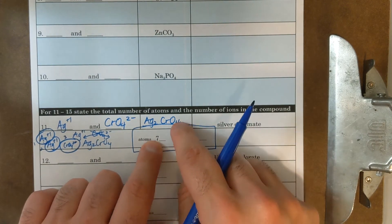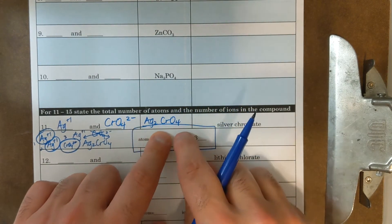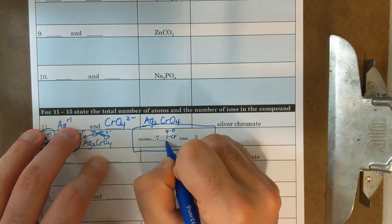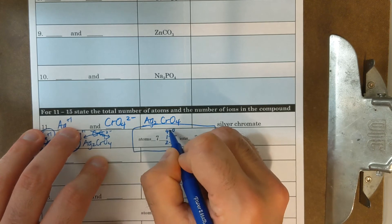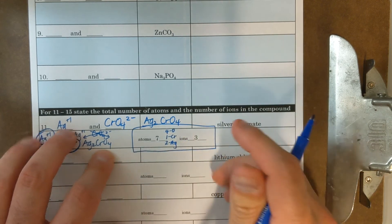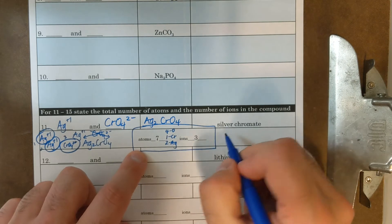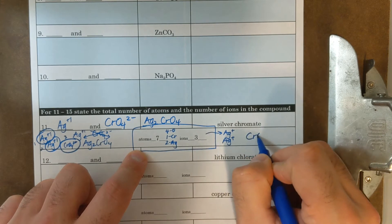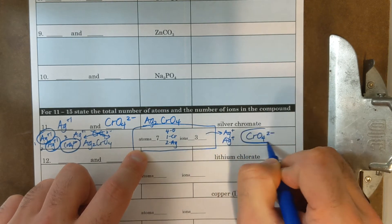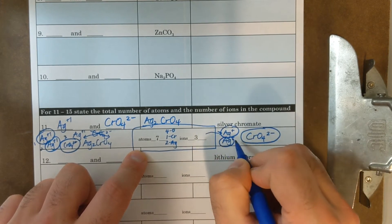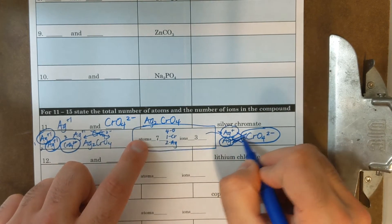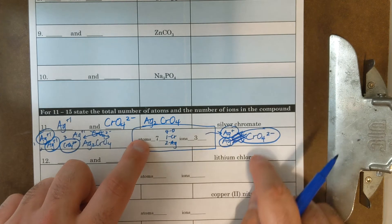There are two AG pluses that's needed for one CRO four two minus. And I'm drawing circles on them like up in the previous questions. So that is why we have one, two, three ions in the formula. But if I want atoms, I'm going to count all the total possible atoms. Well, there's four O's, there's one CR, and there's two AGs. Four plus one plus two is seven.